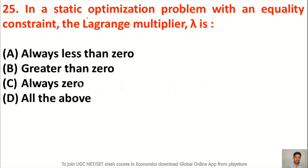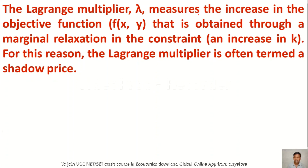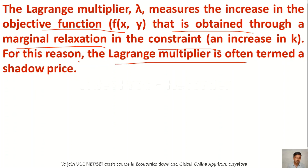Question 25: In a static optimization problem with an equality constraint, the Lagrange multiplier is — option A always less than 0, option B greater than 0, option C always 0. In a static optimization problem with an equality constraint, the Lagrange multiplier measures the increase in the objective function obtained through a marginal relaxation in the constraint. For this reason, the Lagrange multiplier is often termed the shadow price.